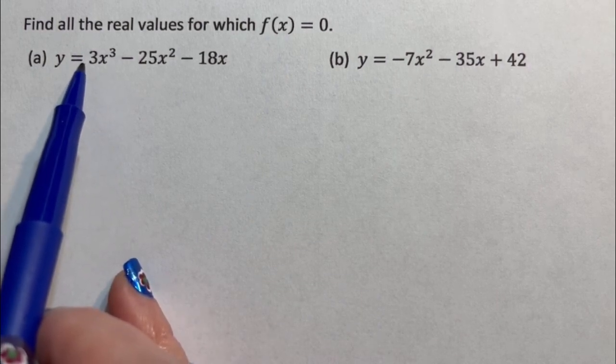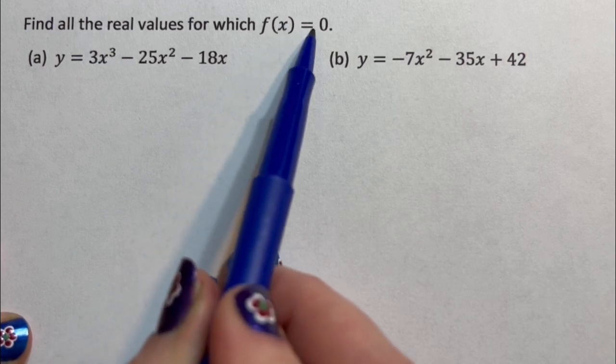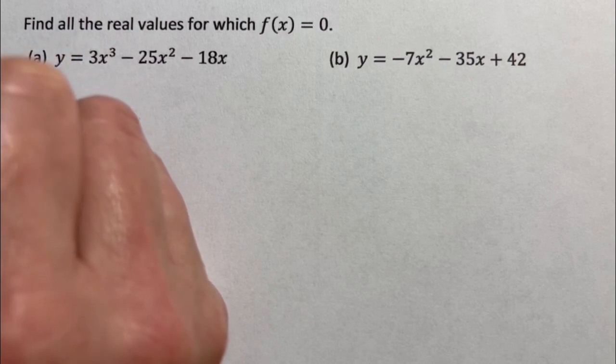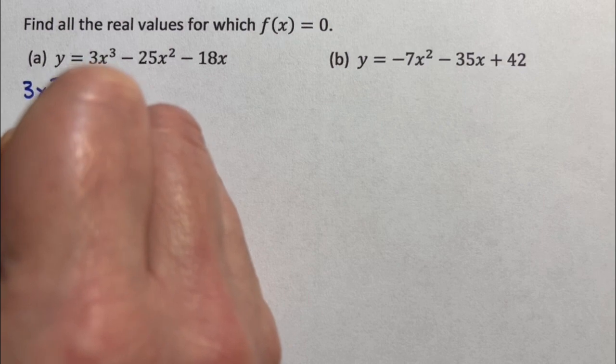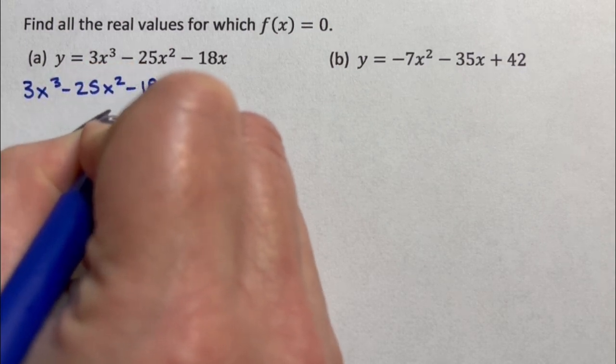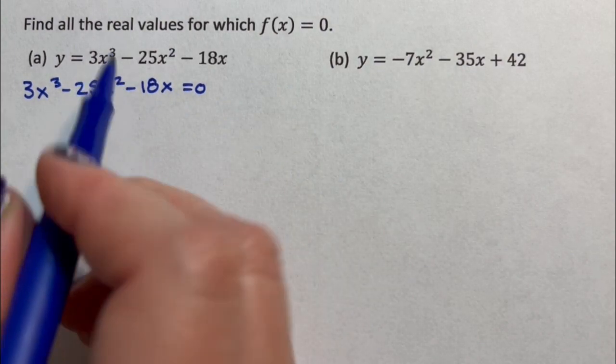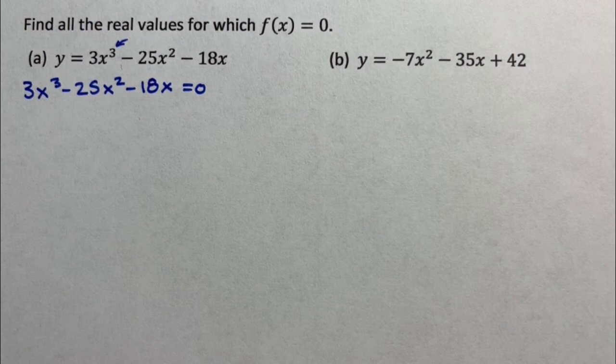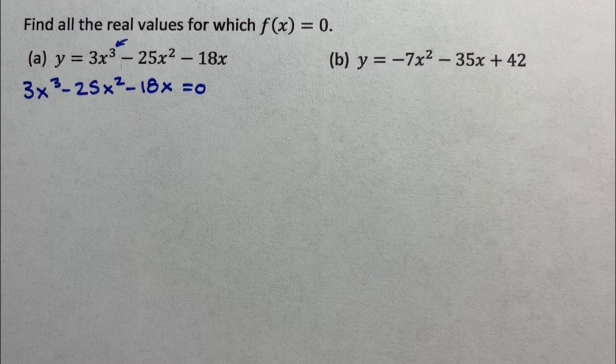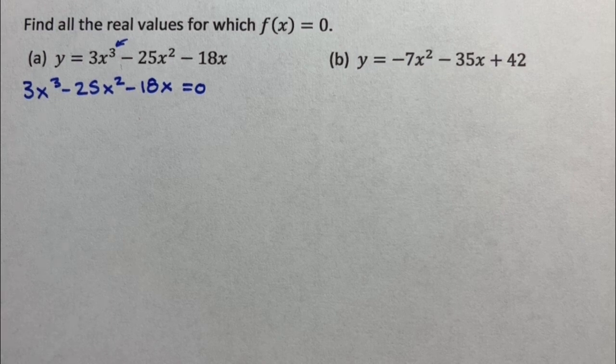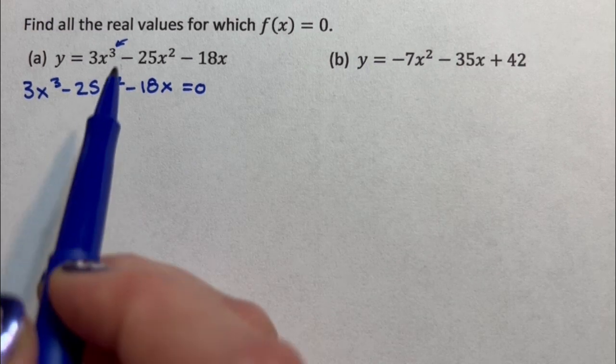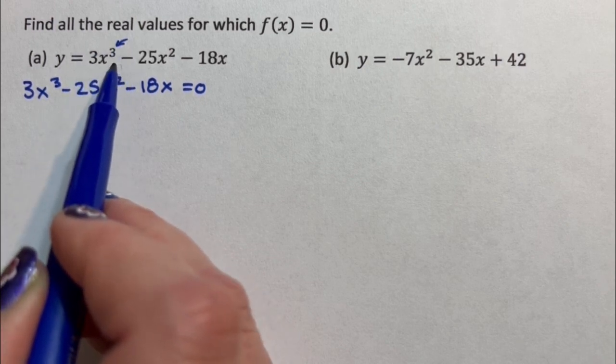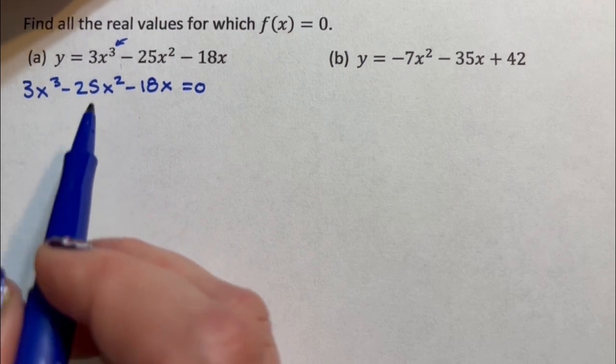In each case, I take what is to the right of the equal sign and set it equal to zero. For this first one, I will say 3x³ - 25x² - 18x = 0. Now this three right there means there are three zeros. I'm looking for three solutions because imaginary answers come in pairs of two. I might have one real solution or three real solutions, but I have to have at least one real solution.